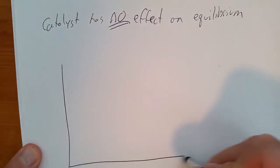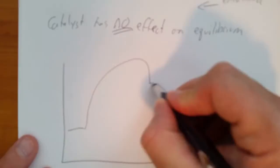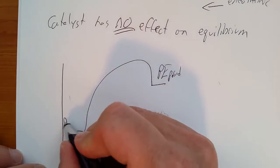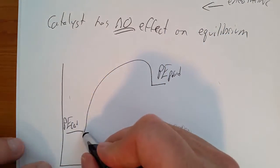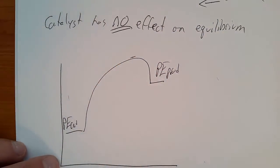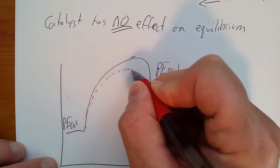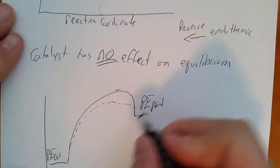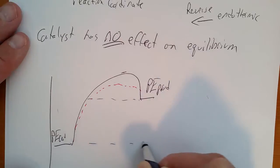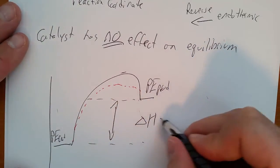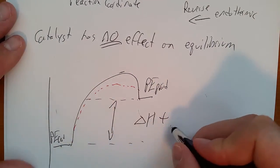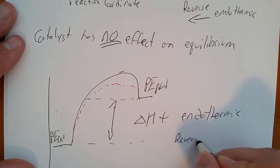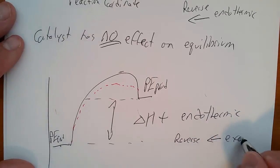We can also have an endothermic reaction where the potential energy of the products is higher than the potential energy of the reactants, giving a very high forward activation energy. We can still use a catalyst to lower the activation energy, but in either case the catalyst does not change our delta H. Delta H is positive — products minus reactants — so it is endothermic. The reverse would be exothermic.